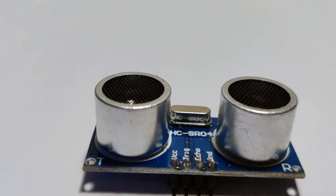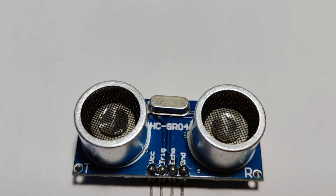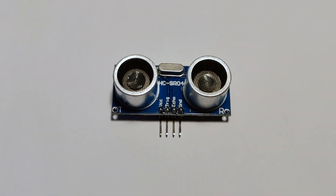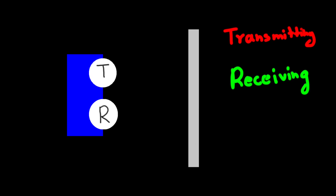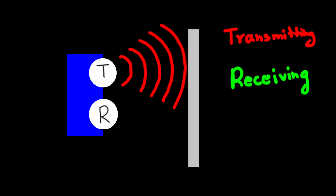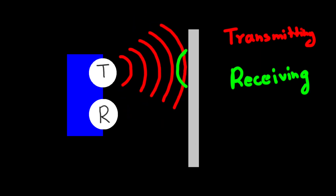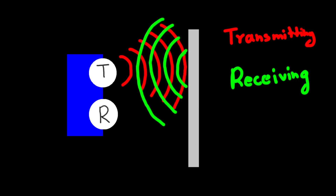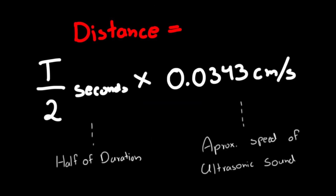This over here is the HC-SR04 ultrasonic sensor. Let me show you how this actually works and how we can find distance using it. This sensor has two transducers — one which transmits and one which receives ultrasonic sound waves. Our transmitter gives out these sound waves, and if an object is detected we get a reflection back, which is caught by the receiver. To calculate distance, we divide the total duration by two — since we only want the time to one side — then multiply by the speed of ultrasonic sound waves.